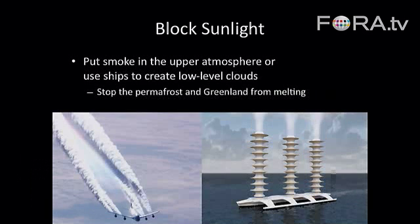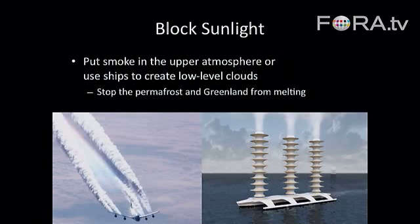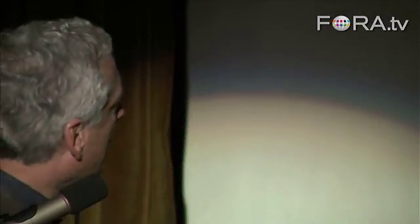The one that's talked about the most, and it's somewhat easy in some ways, is blocking sunlight. You only have to reduce the amount of sunlight hitting the earth by about 2% to reverse the effects of climate change. The most talked about approach is putting sulfates in the upper atmosphere using planes, rockets, or other things. That's sort of what we know will work because that's what happens after a volcano.